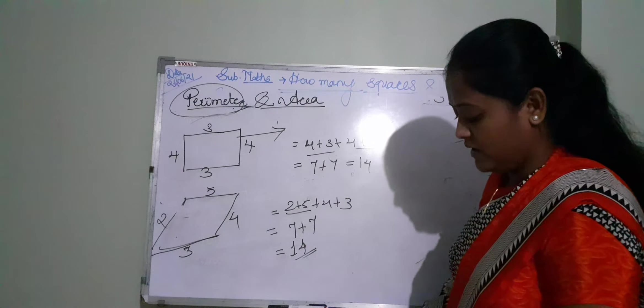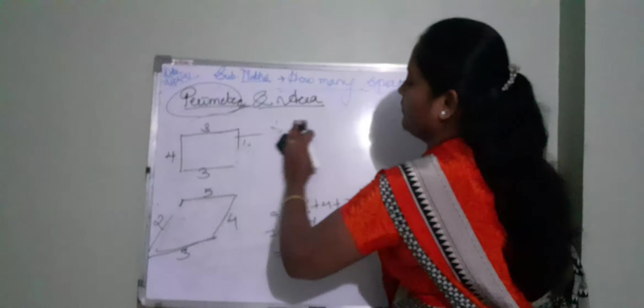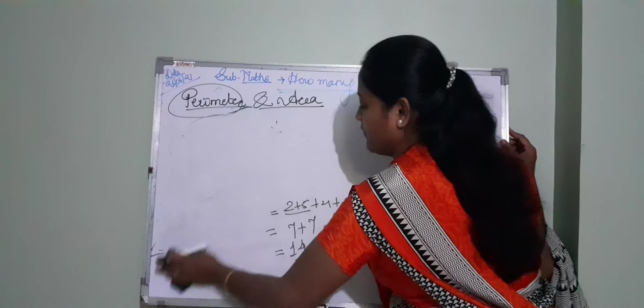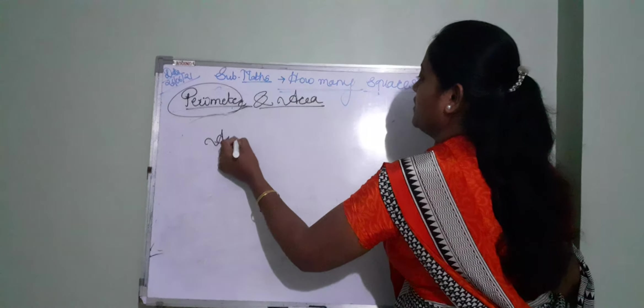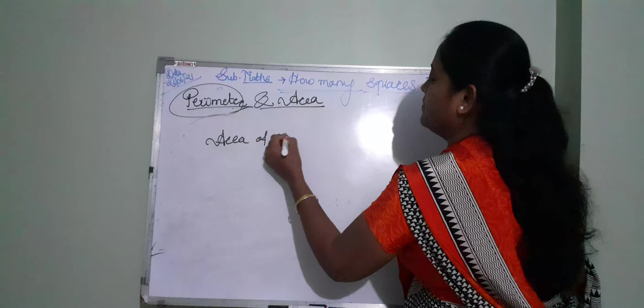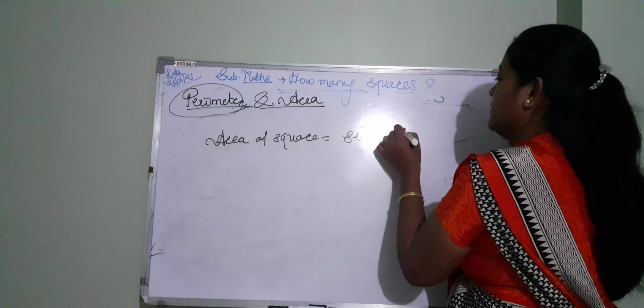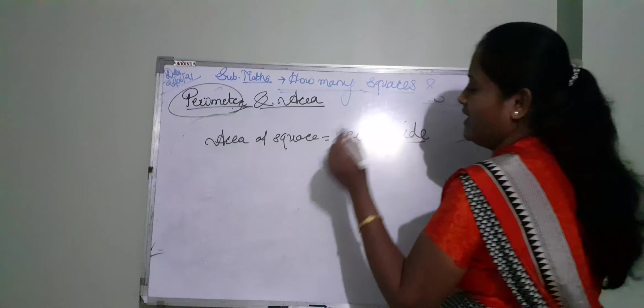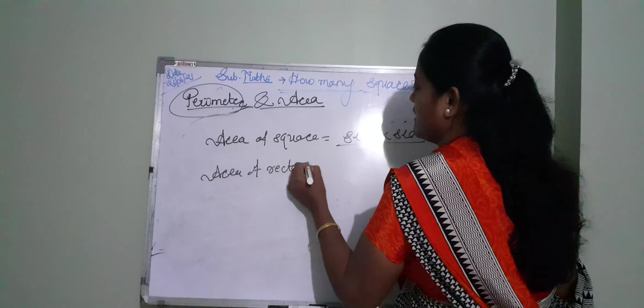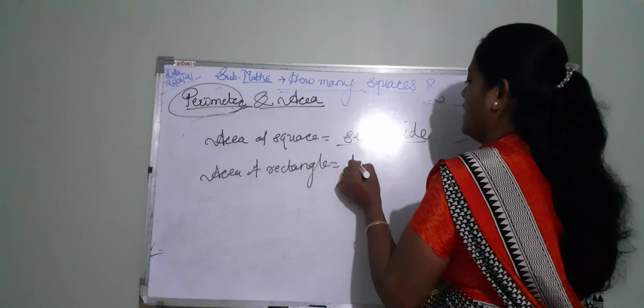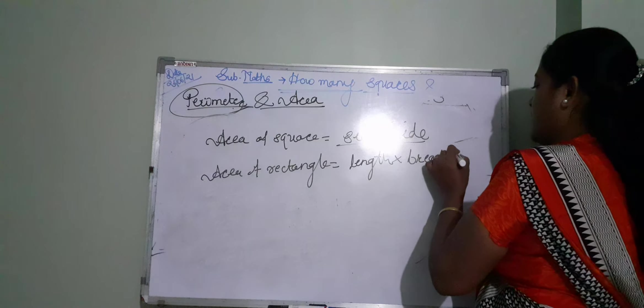Okay students, like that only you have to find that is the area. Area also has a formula, but in that lesson, you will find the areas by the grid. But the formula of area of square is side multiplied by side, and area of rectangle is length multiplied by breadth.